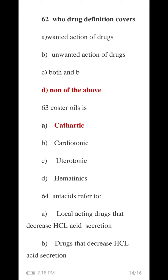Question 61 MCQ: Castor oil is a cathartic from a plant source. It also has a uterotonic effect — similar to effects in pregnant women. The uterotonic effect of castor oil makes it a cathartic with additional uterotonic properties.